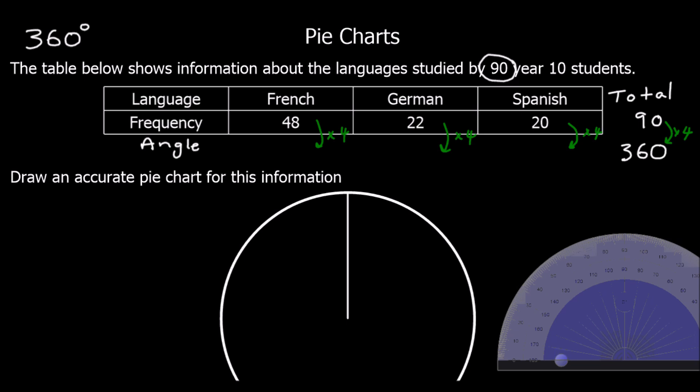So we're going to do this for each of them. For French, we've got 48 times 4, which is 192. For German, we've got 22 times 4, which is 88. And Spanish, 20 times 4, that's 80. So here are our angles. We're going to draw 192 degrees for French, 88 degrees for German and 80 degrees for Spanish. If we add them up and check, we should get 360 degrees in total.